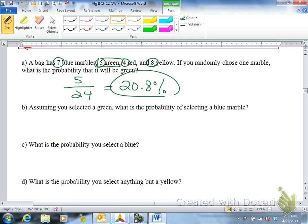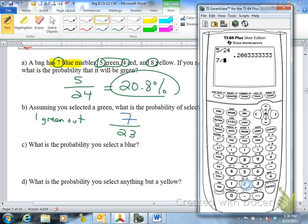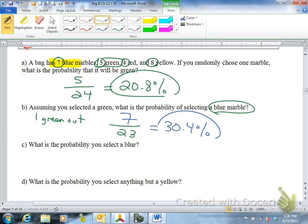Letter B. Assuming you selected a green, what is the probability of selecting a blue? So one green is out. That means you have 23 marbles left, because you got rid of one of the greens. Probability of selecting a blue, how many ways can you pick a blue marble? You have seven blues, so you have seven. Seven divided by 23, you would put 30.4%. You have a 30% chance, one in three chance, that you get a blue.